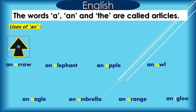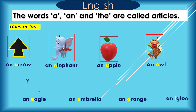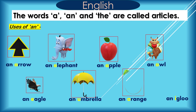Uses of AN: An arrow, an elephant, an apple, an owl, an eagle, an umbrella, an orange.